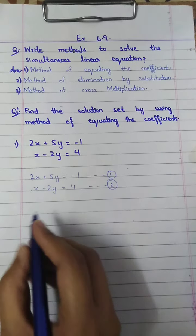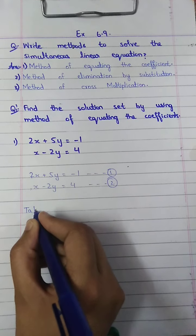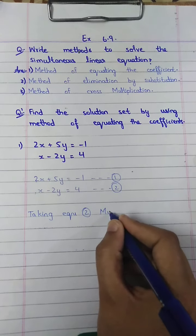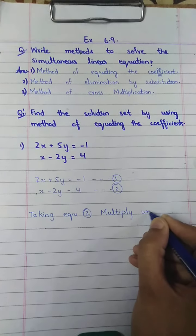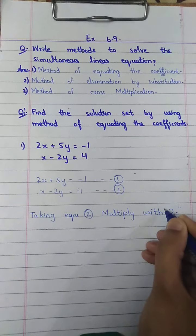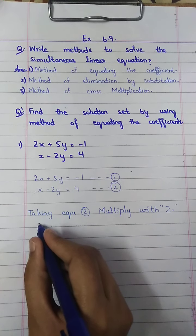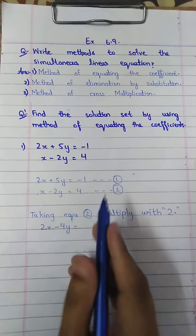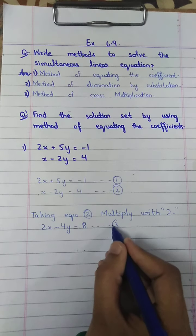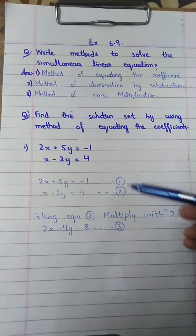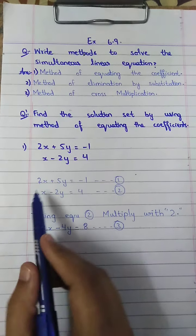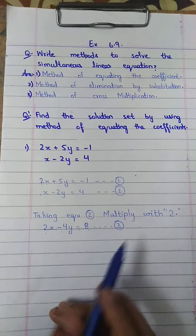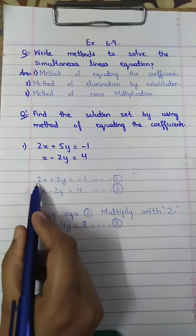Now we will take equation number 2 and multiply it by 2. After multiplying, the term becomes 2x, and the right-hand side becomes 8. This becomes our third equation. Now we take the first equation: 2x plus 5y equals minus 1, and the third equation: 2x minus 4y equals 8.